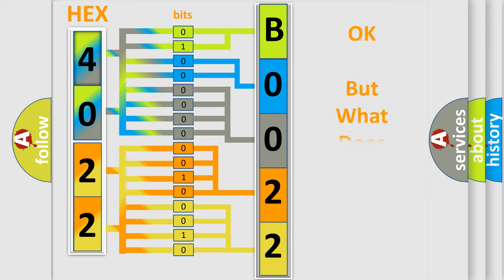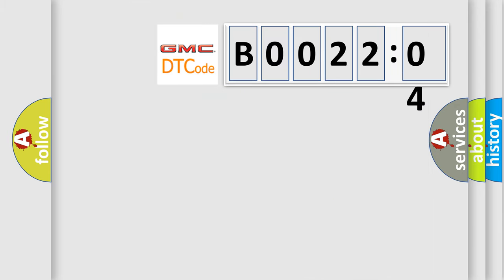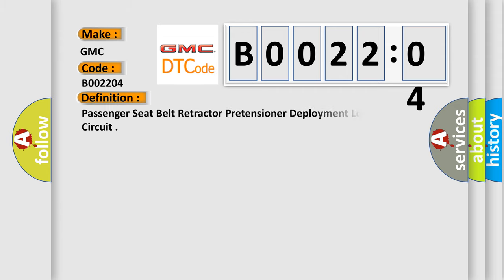The number itself does not make sense to us if we cannot assign information about what it actually expresses. So, what does the diagnostic trouble code B002204 interpret specifically for GMC car manufacturers? The basic definition is: passenger seat belt retractor pretensioner deployment loop open circuit.